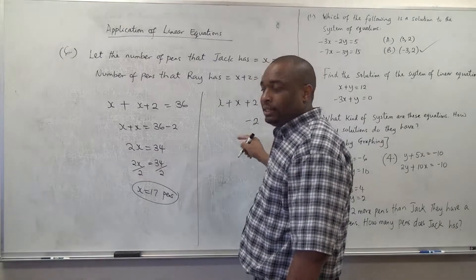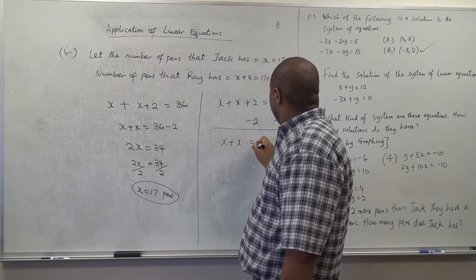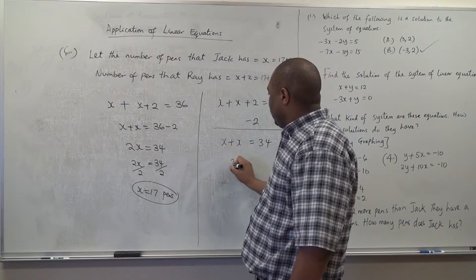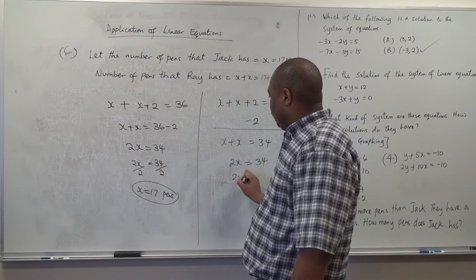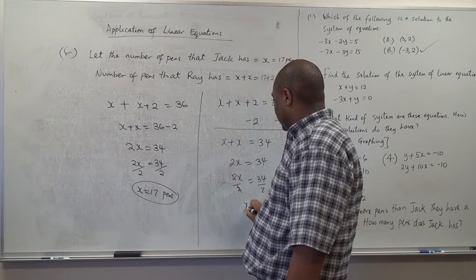Maybe your teacher does this. Minus two, minus two. And it gives us x plus x. It will now be thirty-four. And then you now do two x equal to thirty-four. And then you divide both sides by two.